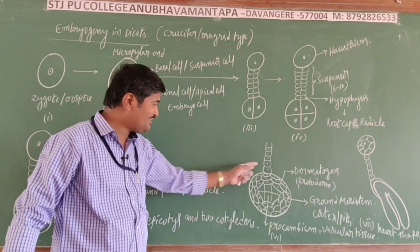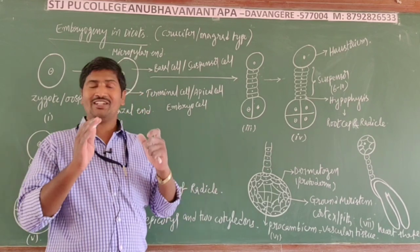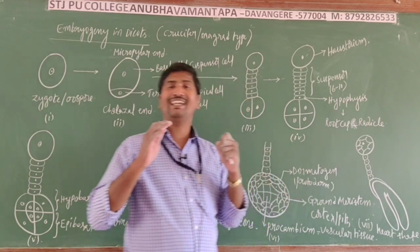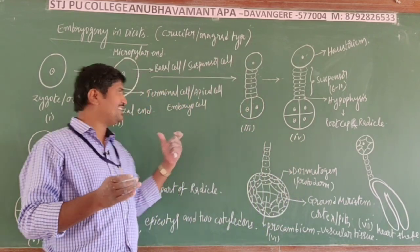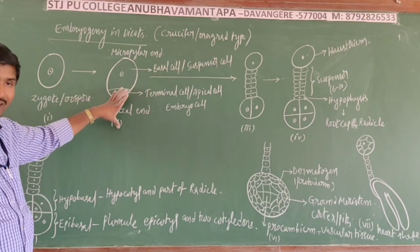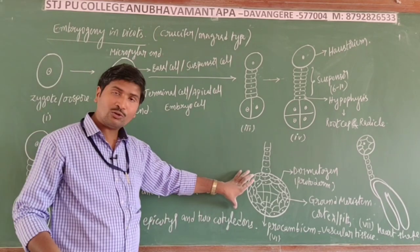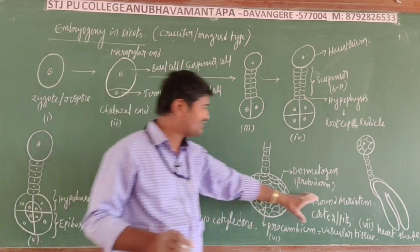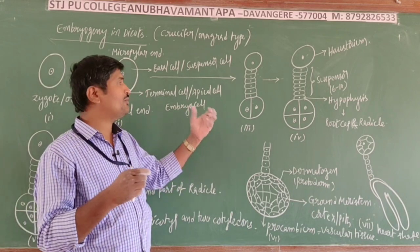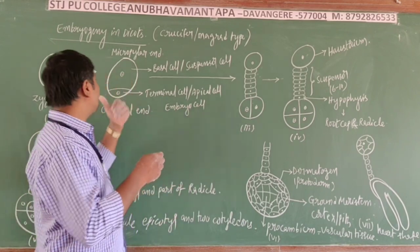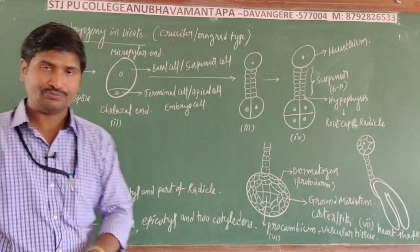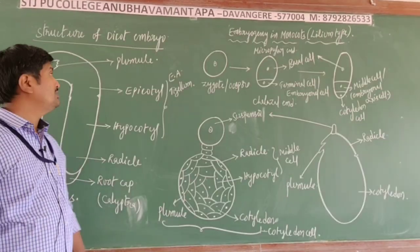This is called the globular stage of the embryo, which finally develops into the heart-shaped embryo. The different stages of embryogeny in dicots are: pro-embryo, globular stage, heart-shaped stage, and finally the mature embryo.